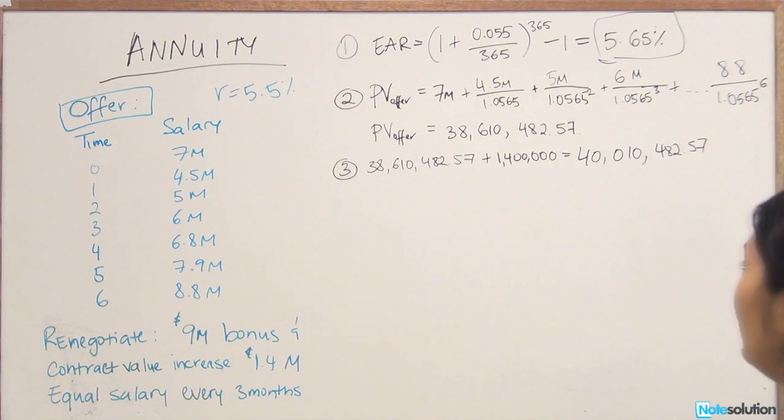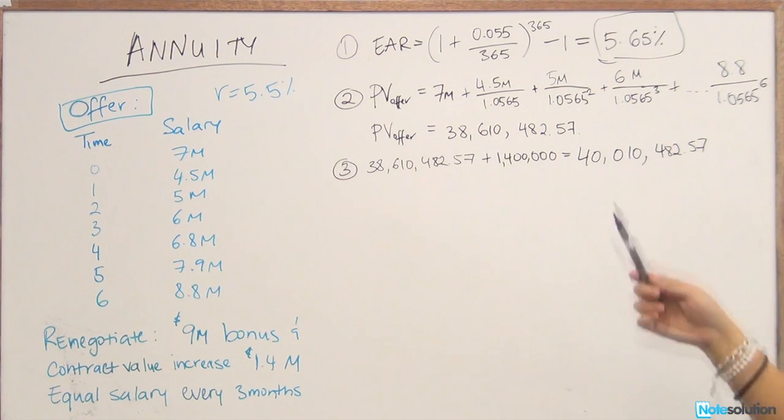Once we add $1.4 million, we know that the total amount of money that this guy wants is $40,010,482.57. So that's good. We're kind of making some progress.